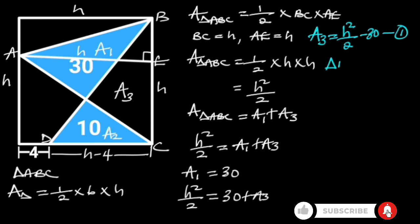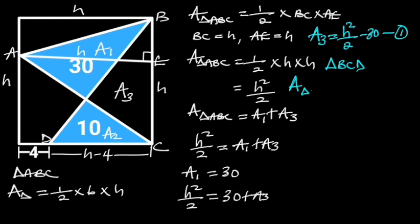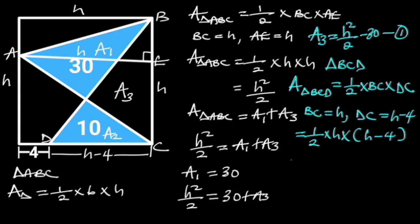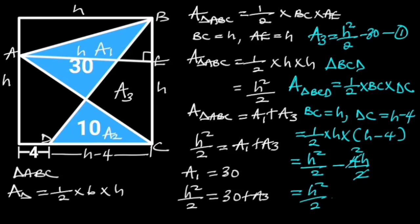Next, let's focus on triangle BCD. The area of triangle BCD is equal to 1/2 times BC times DC. Since BC is equal to H and DC is equal to H minus 4, it follows that the area of triangle BCD will be equal to 1/2 times H times (H minus 4). Simplifying this gives us H squared over 2 minus 2H.